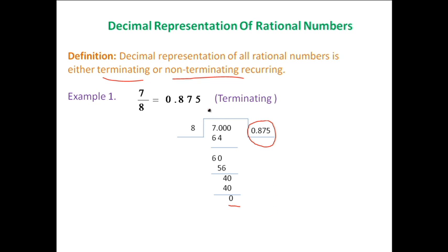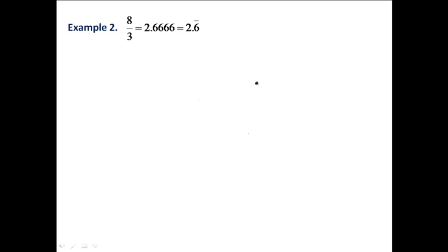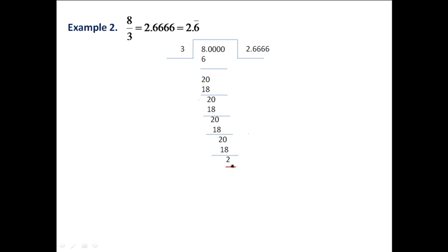Let's look at another example which will show that decimal representation of rational numbers can also be non-terminating recurring. If you divide 8 by 3, using the long division method, you will see that you always end up with the remainder 2. No matter how many steps you follow, the remainder will always be 2 and after the decimal point, 6 keeps repeating — or we can say 6 is recurring after the decimal point.